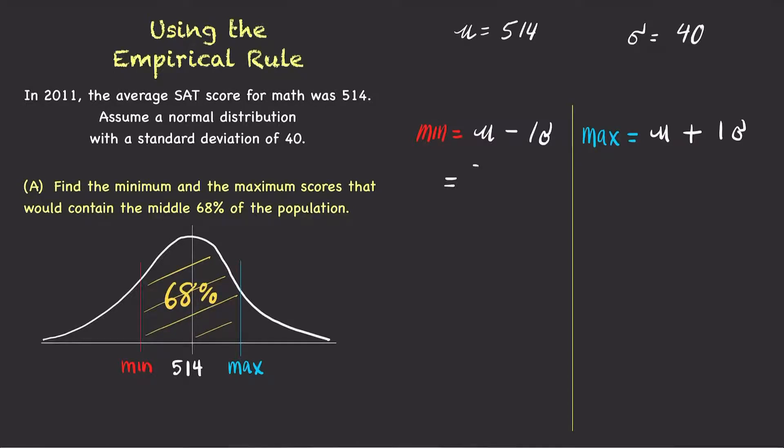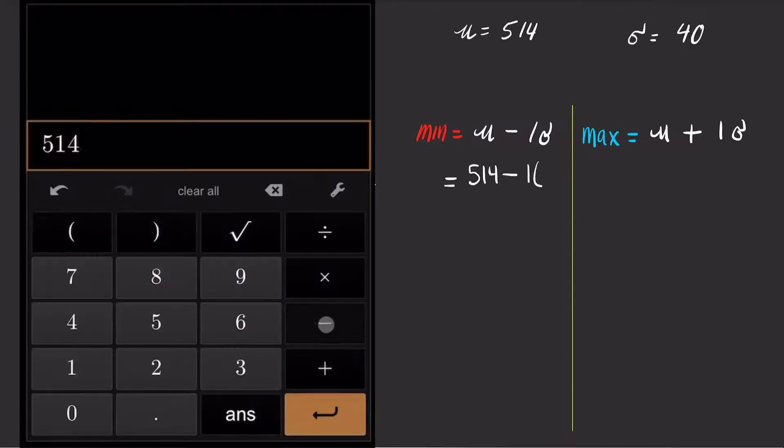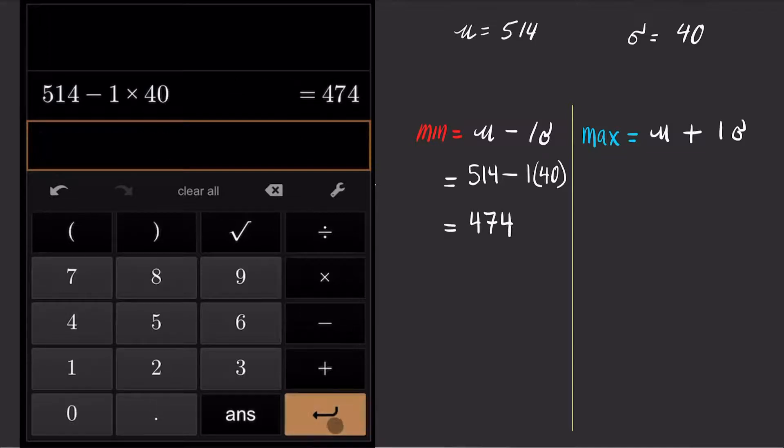So, for the minimum score, take 514 and subtract it by 1 times 40 and the answer is 474.